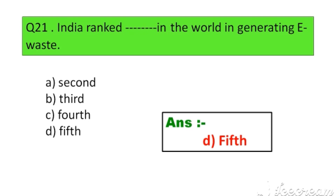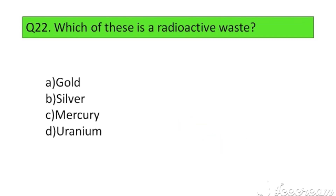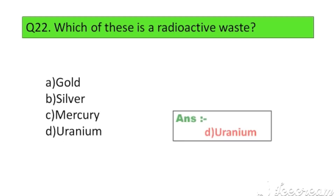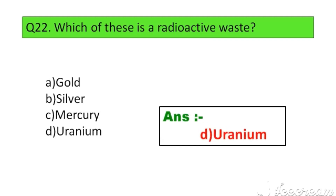Question number 22. Which of these is a radioactive waste? Option A. Gold, B. Silver, C. Mercury, D. Uranium. The right answer is Option D: Uranium.